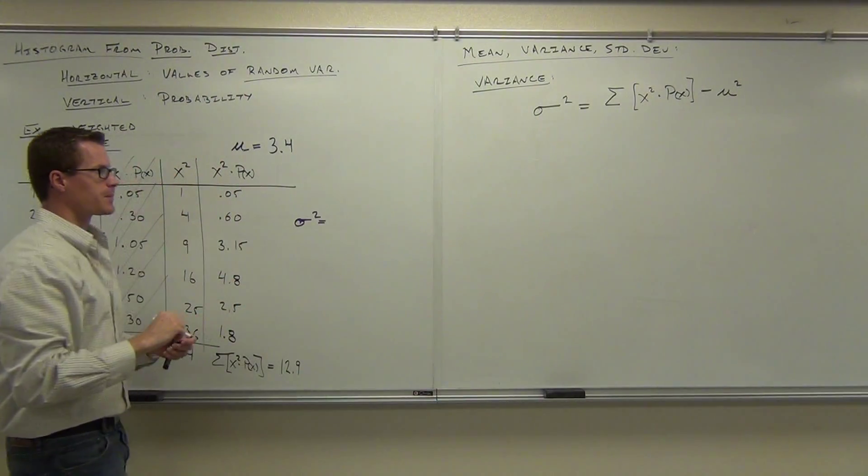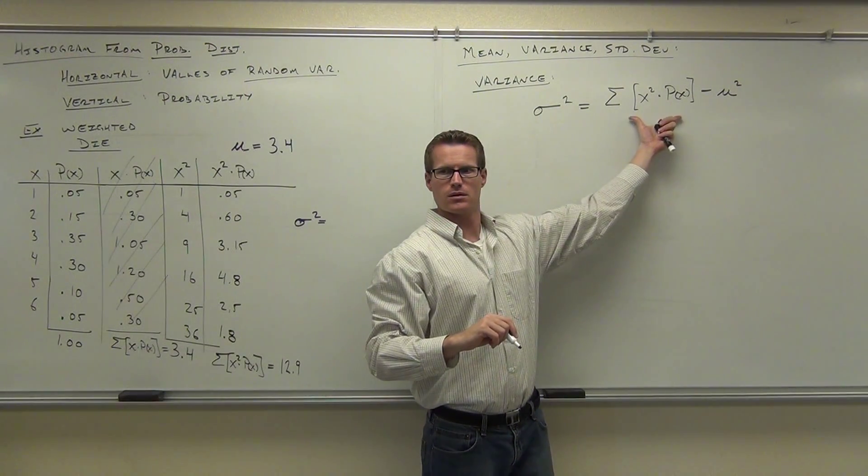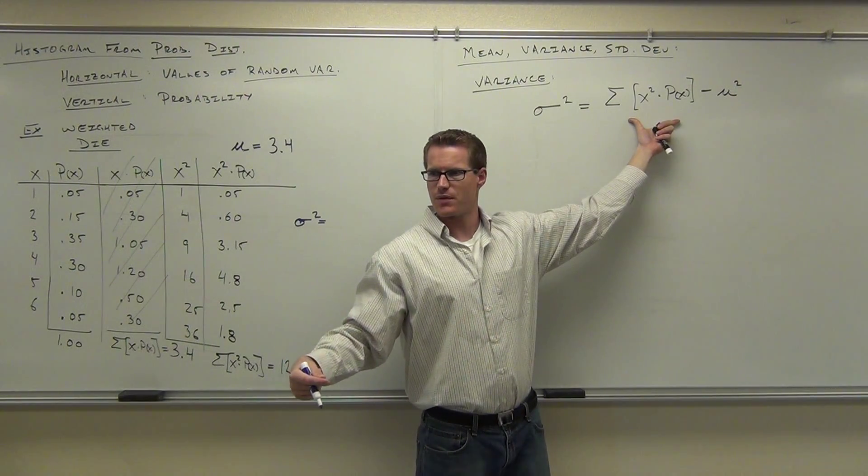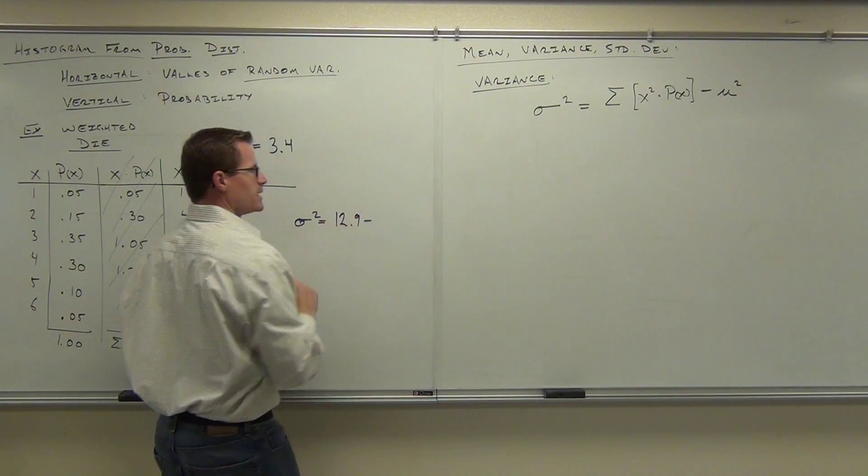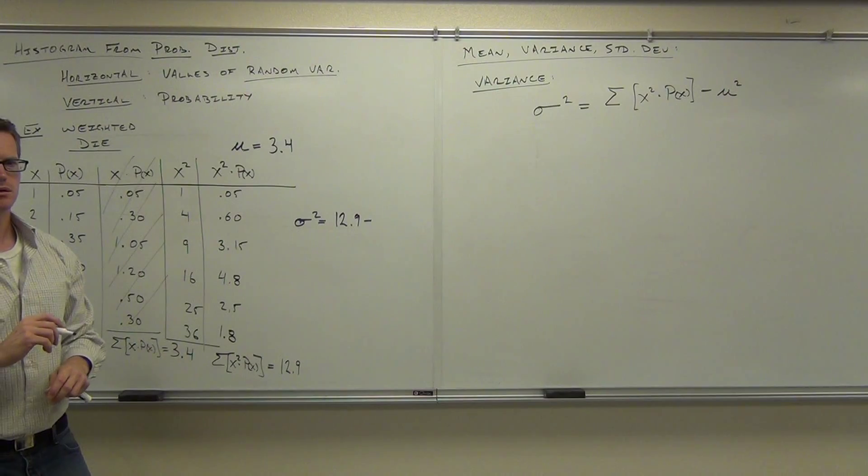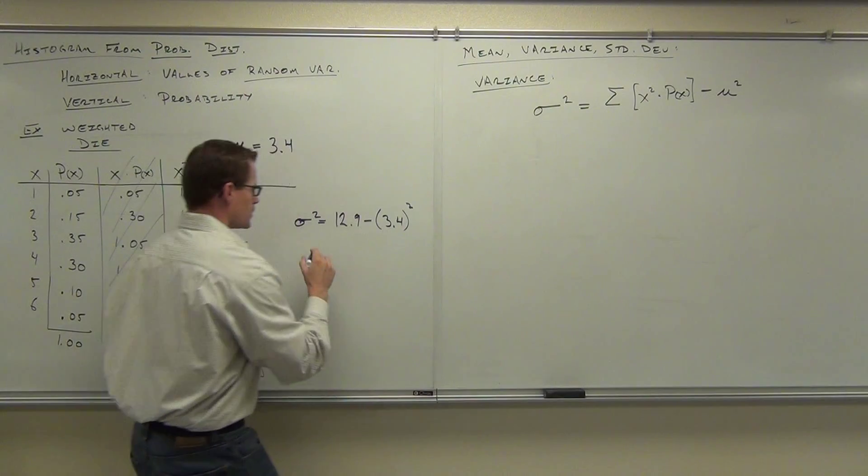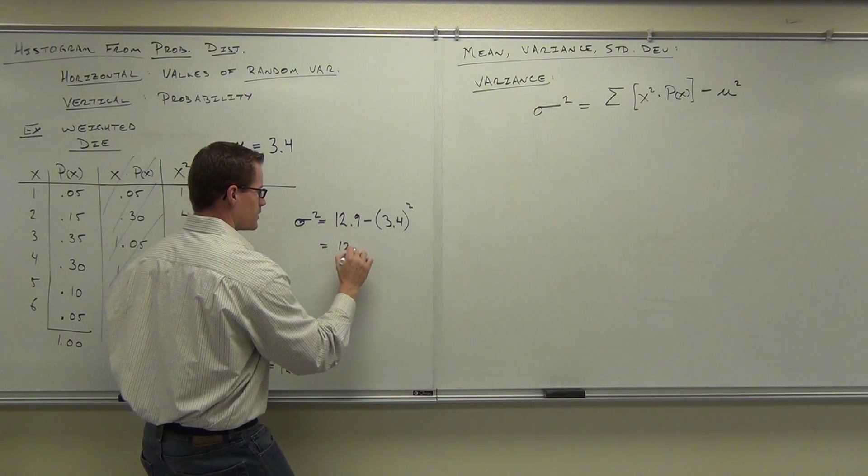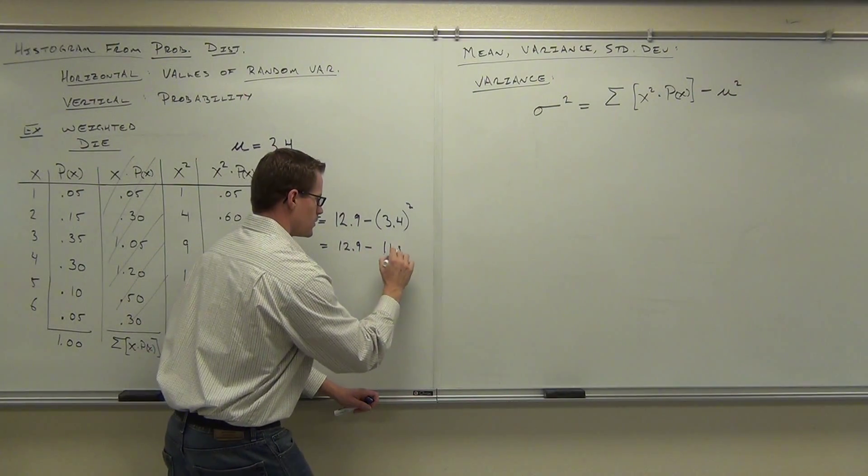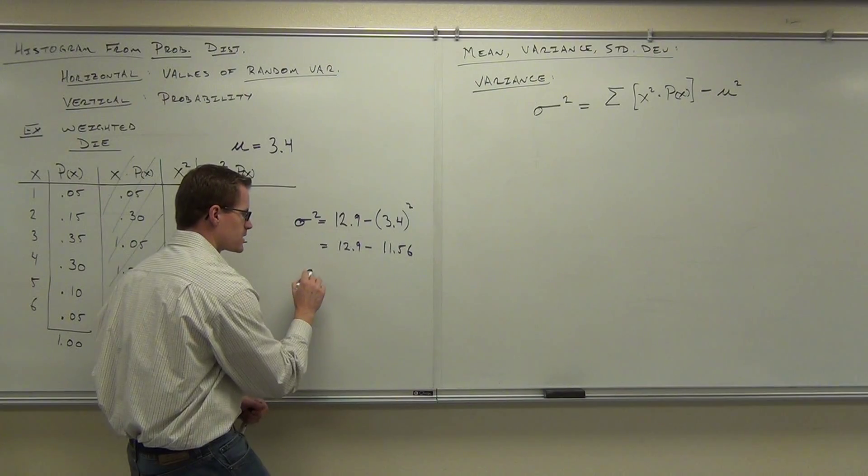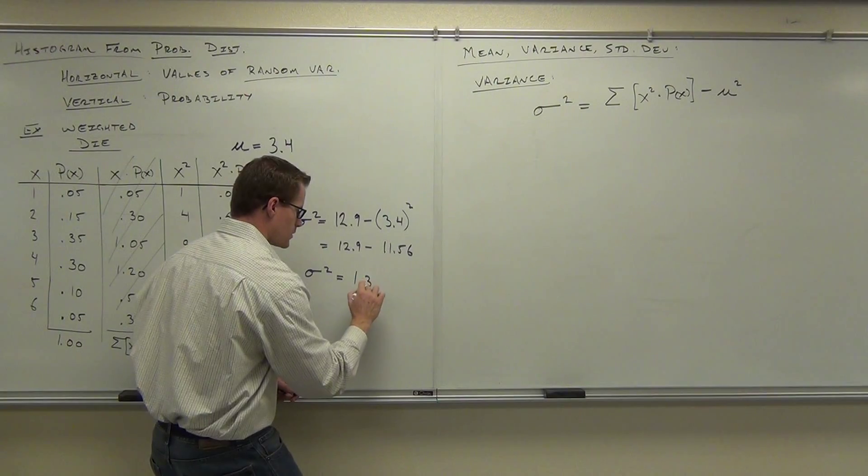So sigma squared, we have this amount. How much is this amount from here to here? Are you guys with me on that? We just found that. That's 12.9. Minus the mean squared. What's the mean? What do you have to do to that? Square it. So we're going to take 12.9 minus, what's 3.4 squared? 12.9 minus 11.56. And our variance is? 1.34.